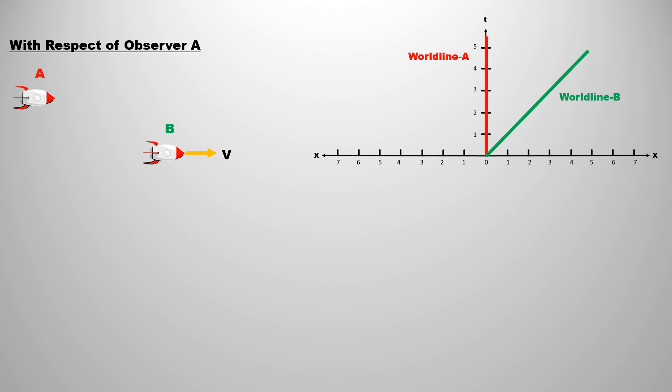This means that world line A is representing the motion of observer A and world line B is representing the motion of B with respect to observer A. However, if we look from the perspective of observer B, then he will observe himself at rest and A is moving toward left side with the same velocity v.